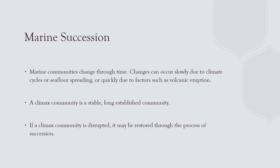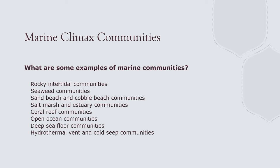Succession is the change of an ecosystem over time. Primary succession occurs in a barren ecosystem like a new volcano; secondary succession — more common — is the recovery of a damaged ecosystem. Eventually you reach a climax community: a mature, balanced ecosystem. Marine climax communities include the rocky intertidal zone, seaweed communities like kelp forests, sandy beaches, salt marshes and estuaries, coral reefs, the open ocean pelagic zone, the deep-sea floor, and hydrothermal vent communities.